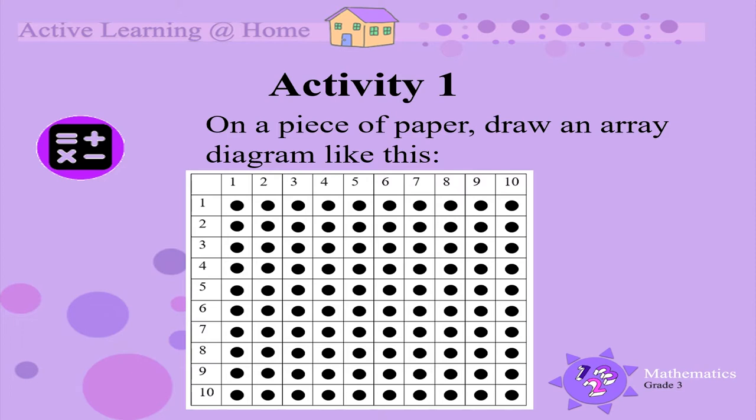Activity 1. On a piece of paper, draw an array diagram like this. You should have the numbers 1 to 10 on the left for each row and the numbers 1 to 10 on the top for each column. Then draw dots in all the blocks.